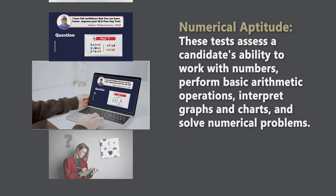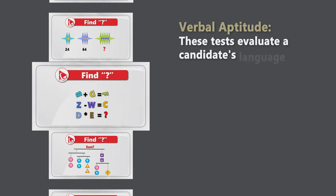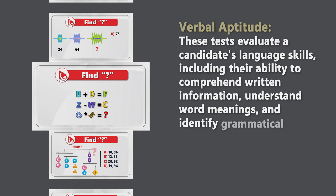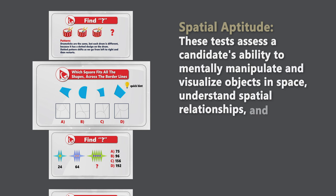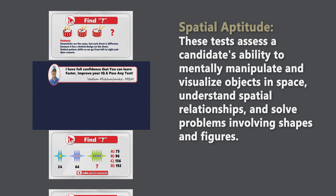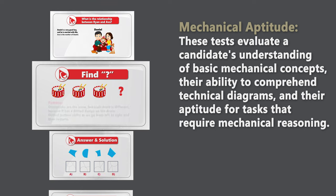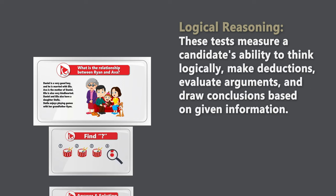Numerical aptitude questions assess a candidate's ability to work with numbers, perform basic arithmetic operations, interpret graphs and charts, and solve numerical problems. Verbal aptitude questions evaluate candidates' language skills, including the ability to comprehend written information, understand word meaning, and identify grammatical errors. Abstract reasoning questions measure candidates' ability to recognize patterns, analyze relationships between shapes and symbols, and solve problems through abstract thinking. Spatial aptitude questions assess candidates' ability to mentally manipulate and visualize objects in space, understand spatial relationships, and solve problems involving shapes and figures. Mechanical aptitude questions evaluate candidates' understanding of basic mechanical concepts, the ability to comprehend technical diagrams, and their aptitude for tasks that require mechanical reasoning. Logical reasoning questions measure candidates' ability to think logically, make deductions, evaluate arguments, and draw conclusions based on the given information.